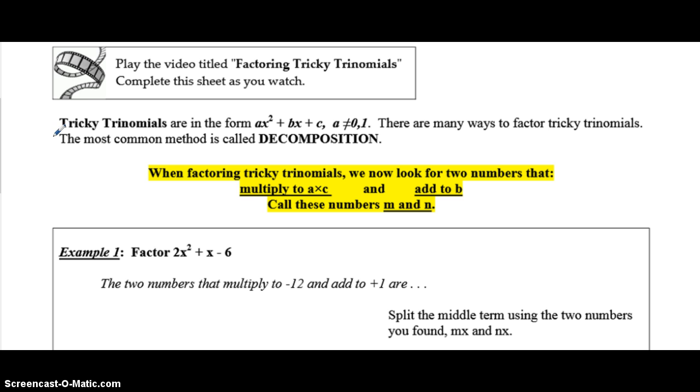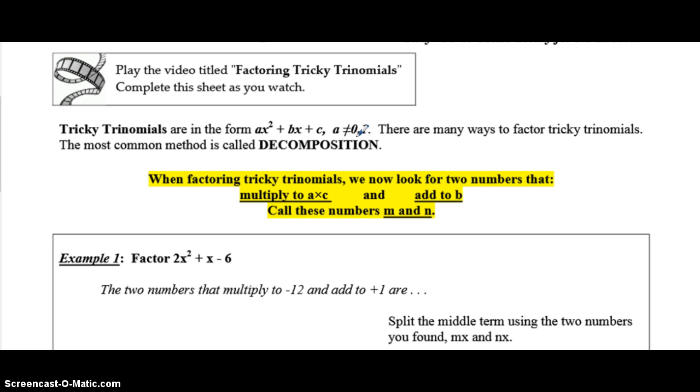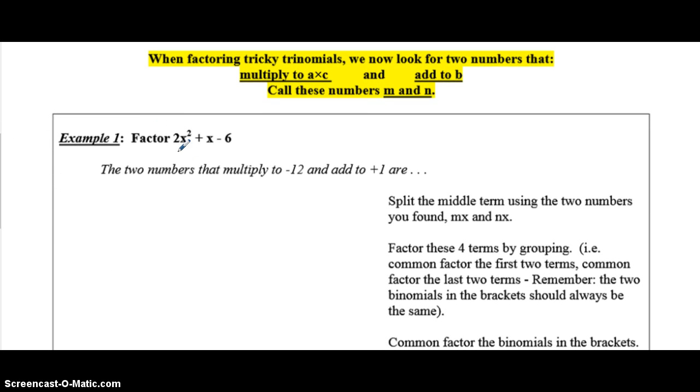Last day, you factored simple trinomials, which were trinomials that started with a coefficient of 1. Tricky trinomials have a coefficient of something other than 1. As well, the a value cannot be equal to 0 either. Now, the first person that comes to me and says why your quadratic equation cannot have an a value of 0 will win a prize. So, whenever the next class is, the first come, first serve, the first person to tell me why your quadratic equation cannot have an a value of 0 will win a candy. Basically, tricky trinomials, a value is some number other than 1 or 0.